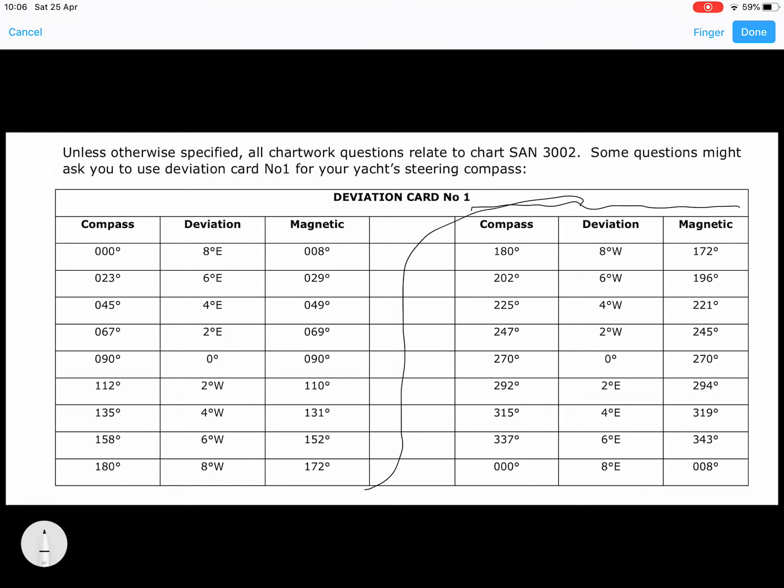Really just follow underneath here. What you need to remember is, take for example if they say to you a ship's compass is 009 degrees, you need to look under this column and 009 degrees is starting to become almost halfway, so we should be really saying well then it's going to be 7 degrees east.